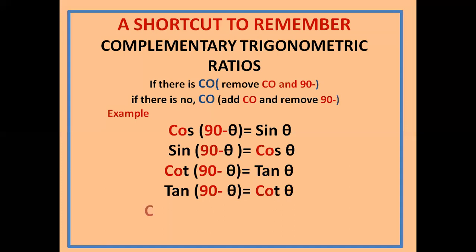Then you get cot(90 minus θ): there is 'co', so remove 'co' and '90 minus'. Then you get cot θ.